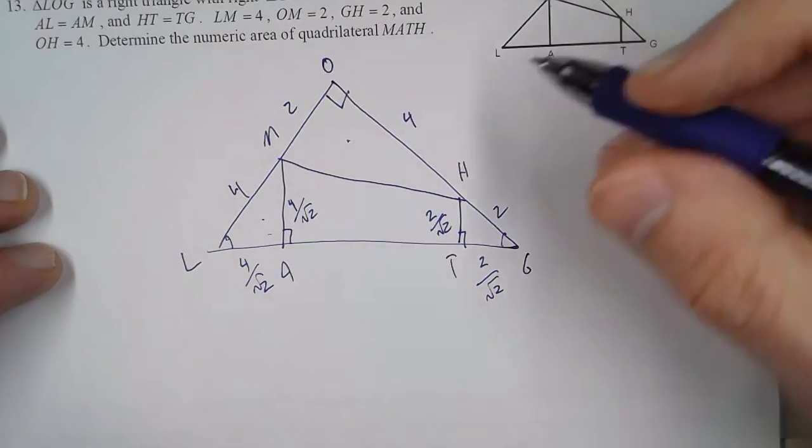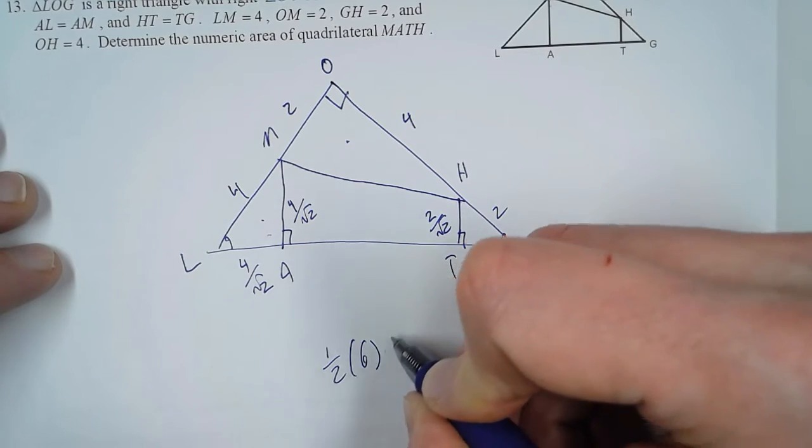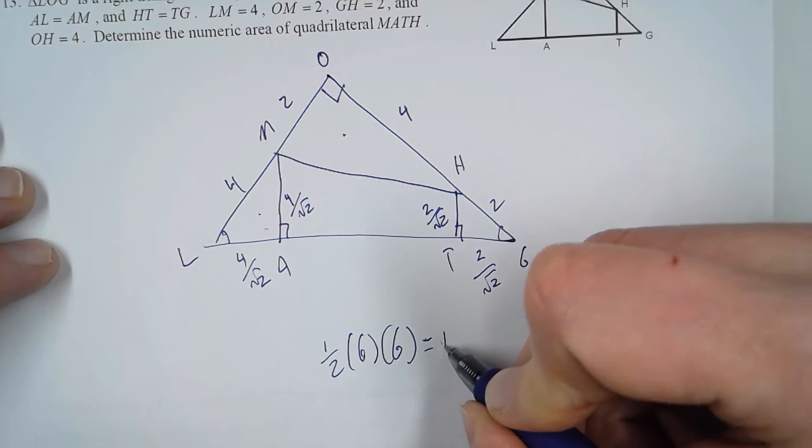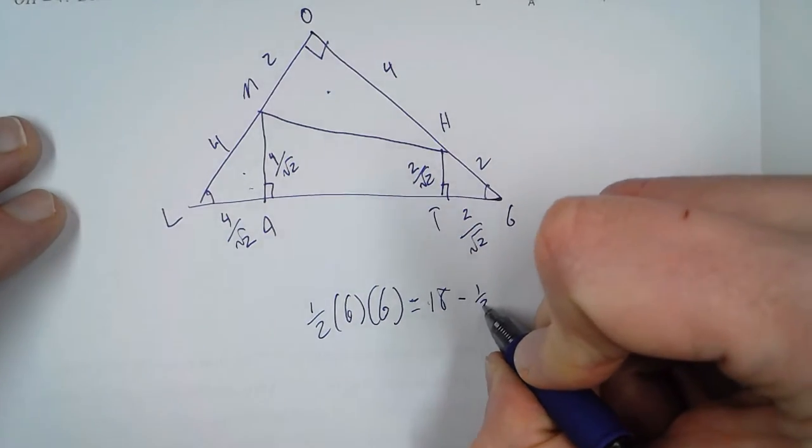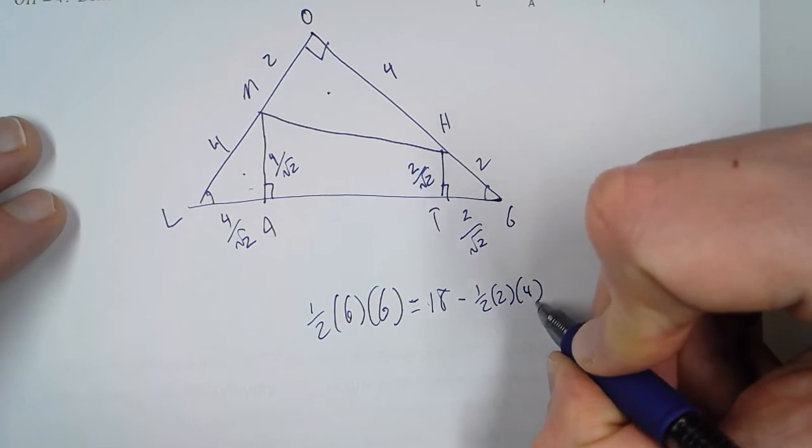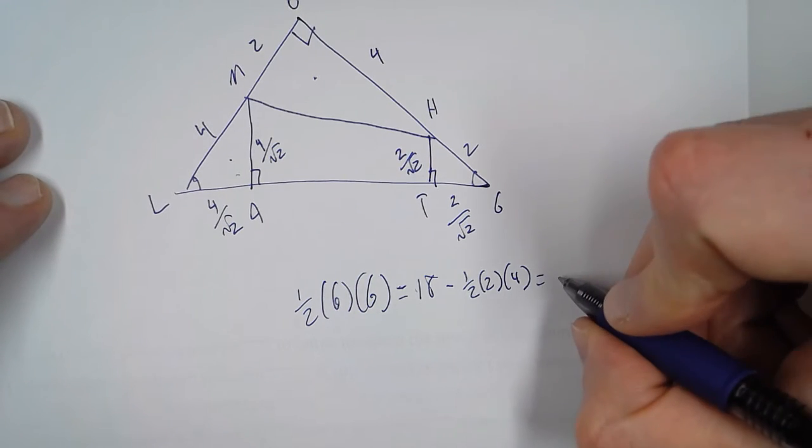All right, so the entire triangle is 1 half base, which is 6, times the height, which is 6, which is 18. And then from that, we subtract 1 half this triangle, which is a base of 2, height of 4. So, that's 4, so that's 14.